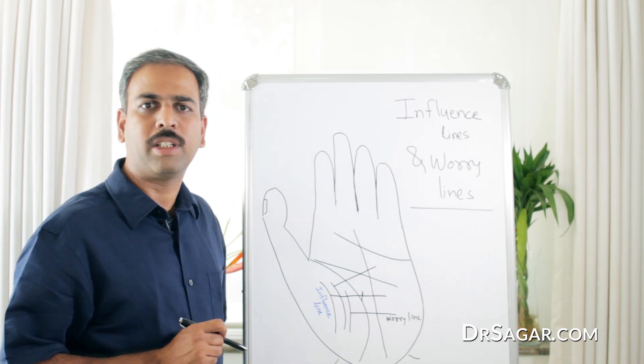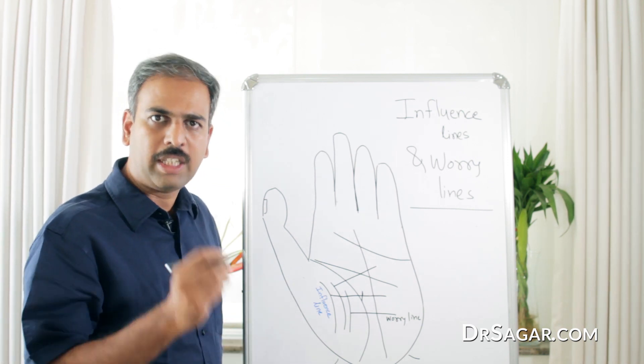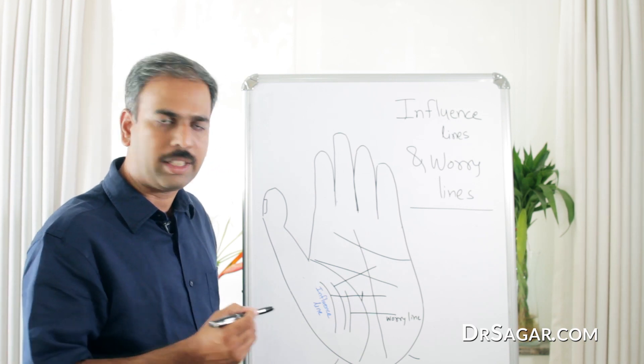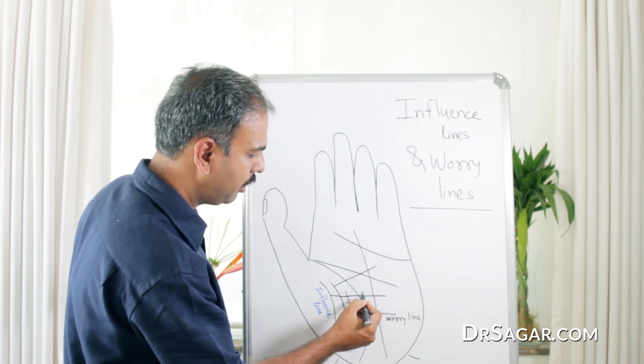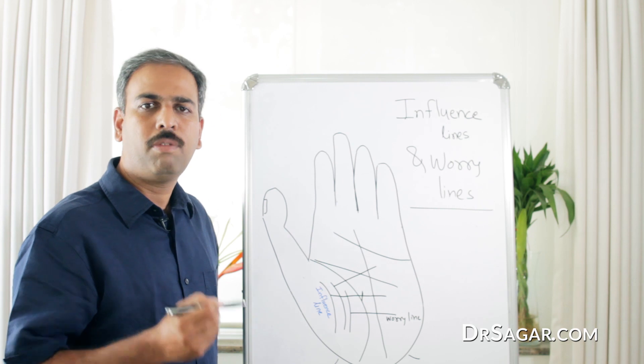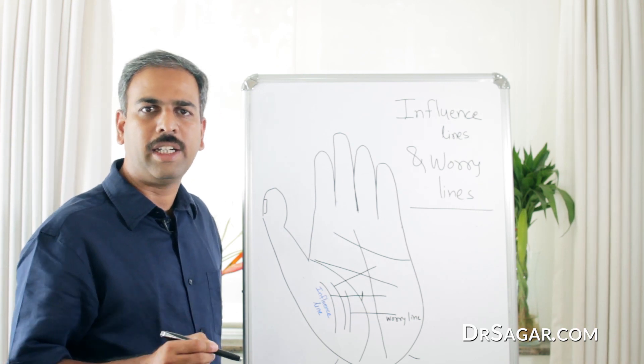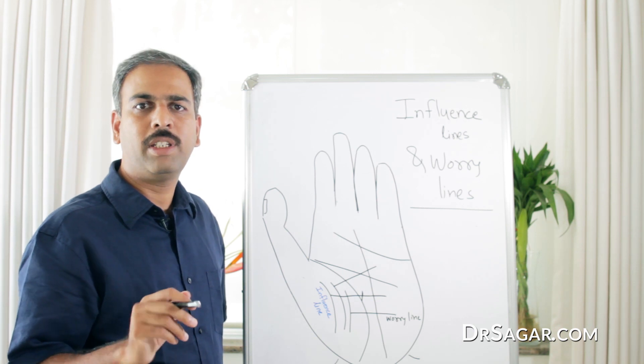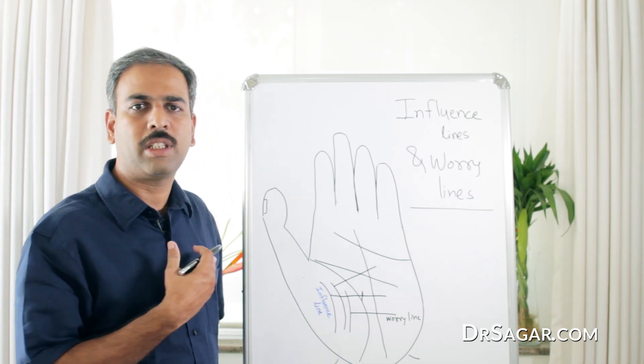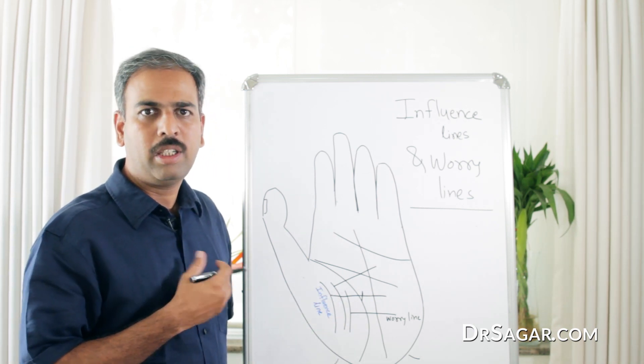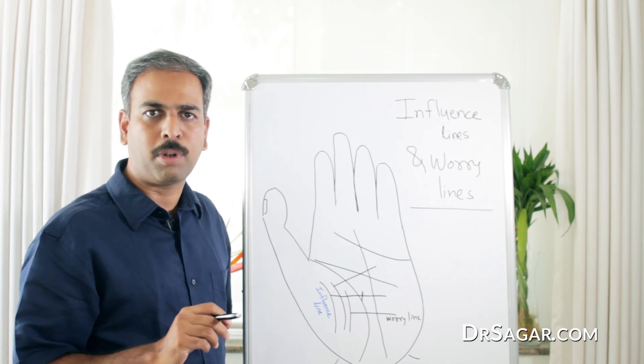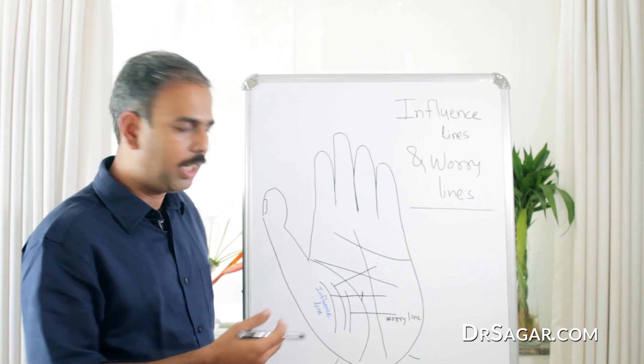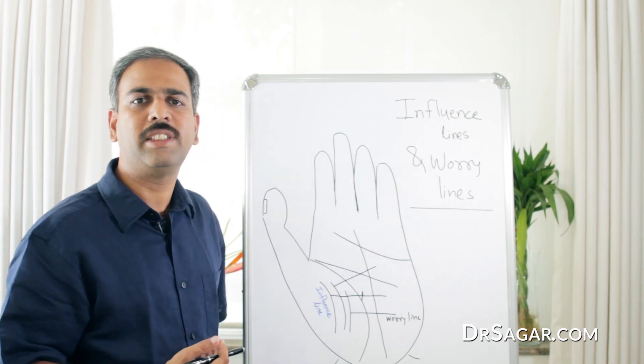So, what is the significance of these lines? Any line that starts from the Influence Line and cuts the Life Line, Fate Line, or Head Line is called the Worry Line. Why worry? Because the persons close to our heart, if they have a problem, we start worrying about them. This is what the Worry Line is indicating.